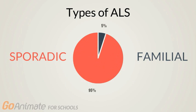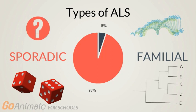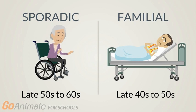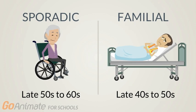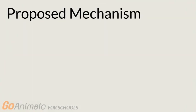ALS is divided into two categories: sporadic and familial. Sporadic ALS is the more common form, accounting for more than 95 percent of all ALS patients. Its development is unknown, as onset is random with no apparent genetic inheritance. Familial ALS, on the other hand, has strong genetic influences, with more than 12 mutant genes identified. Sporadic ALS typically appears in patients in their late 50s to early 60s, while familial ALS patients develop symptoms earlier, typically in their late 40s to early 50s.